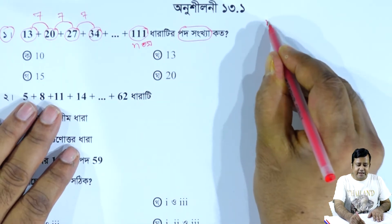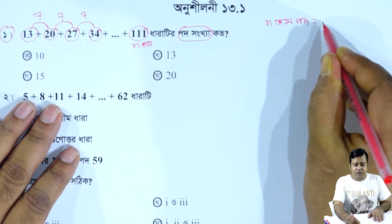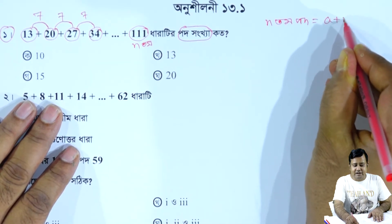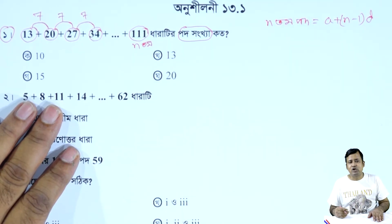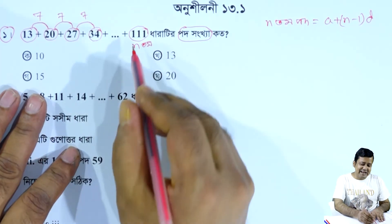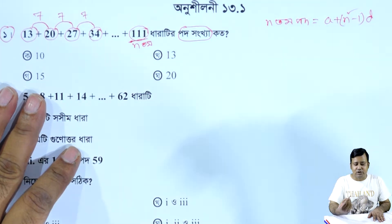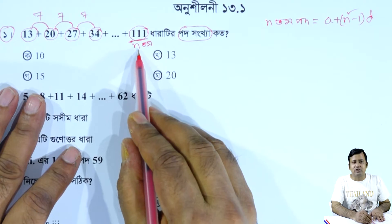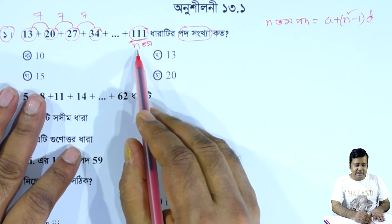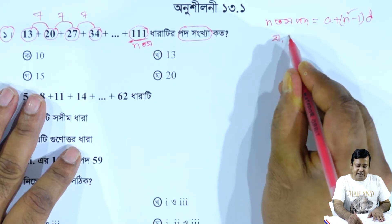We have to argue with repetitions. This is: the nth term is a plus n minus 1 into d. If you see the next question, here is 11 and 11.